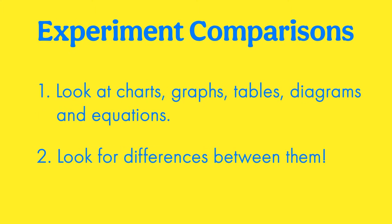The first of these is comparison questions. Comparison questions happen when they say something like 'compared to experiment one, experiment two...' — so it'll mention two experiments and ask you to compare or contrast those experiments. When they ask about experiment comparisons, the first thing you're going to look at, like you do all the time, is charts, graphs, tables, diagrams, and equations to see if between the two experiments there's any apparent difference.